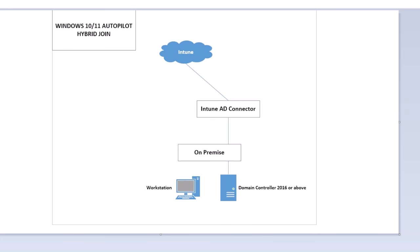Today we're going to talk about Windows Autopilot hybrid join. We'll take a Windows PC, whether it's Windows 10 or 11, join it to Azure AD, enroll it in MDM, and then join it to the on-premise domain controller. A lot of times I've seen people struggling to get this working because there are blue screen errors. I'm going to show you how to do it correctly and get it working every time.